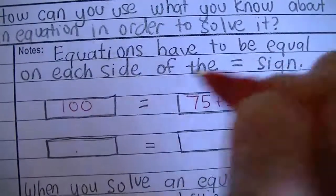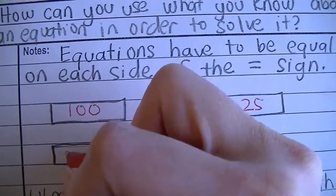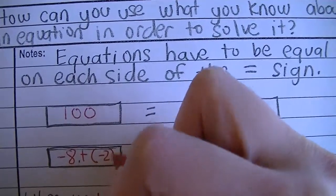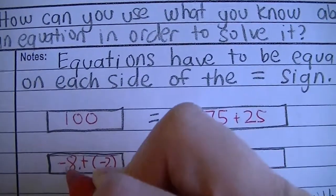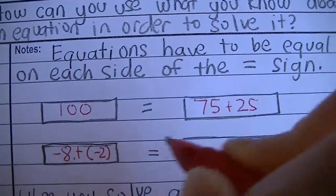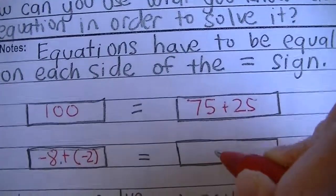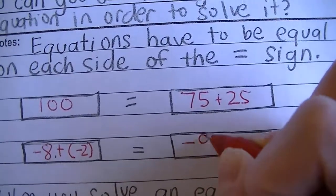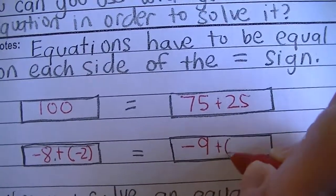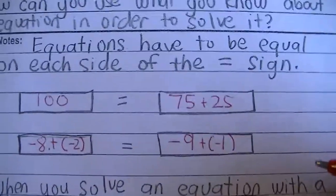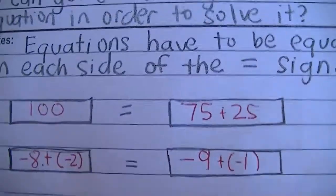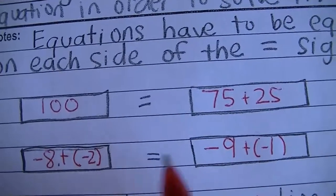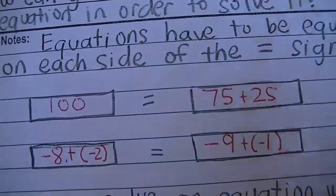Here's another example. If this side equaled negative 8 plus a negative 2, that equals negative 10. So therefore, this side has to also equal negative 10. So I can make it negative 9 plus a negative 1. Since both sides of the equal sign are equal, those are true equations.